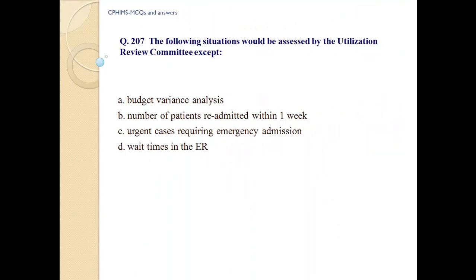Question number 207. The following situation would be assessed by the Utilization Review Committee except: A. Budget variance analysis, B. Number of patients readmitted within one week, C. Urgent cases requiring emergency admissions, D. Wait times in the ER. Answer A: Budget variance analysis.